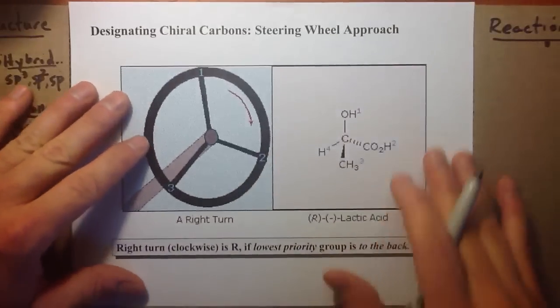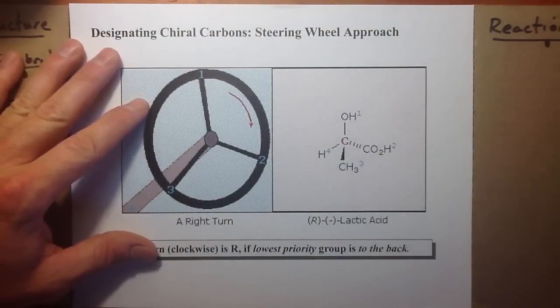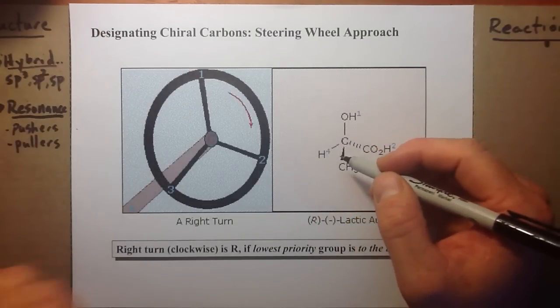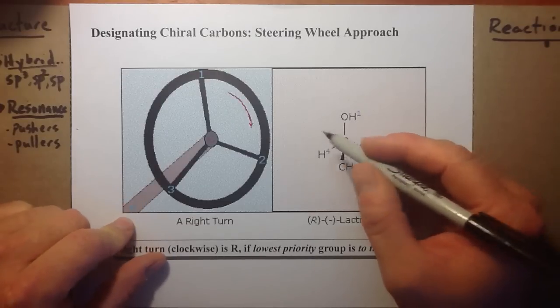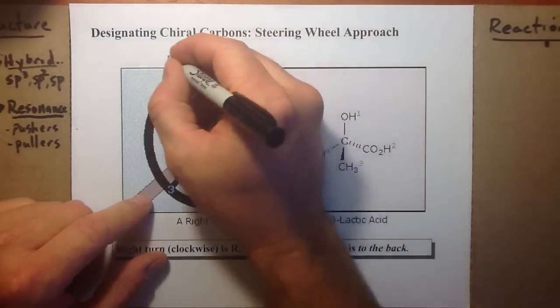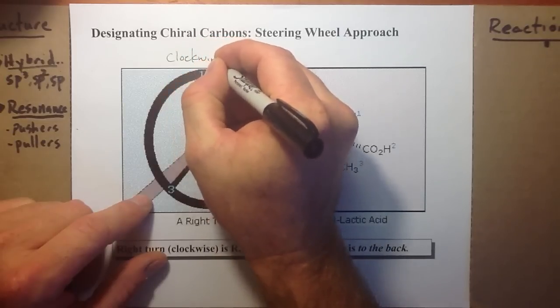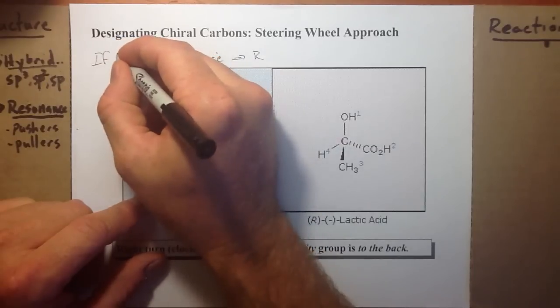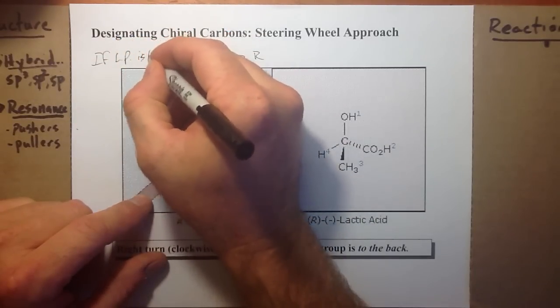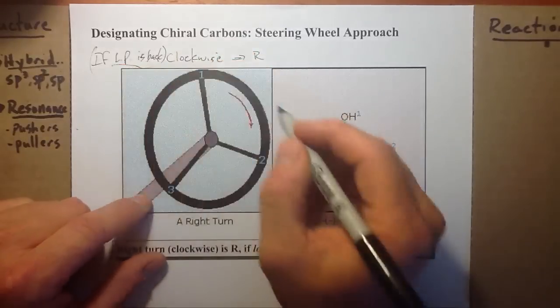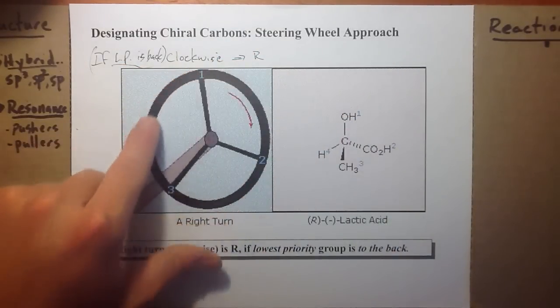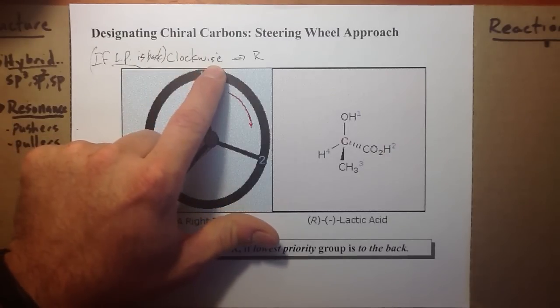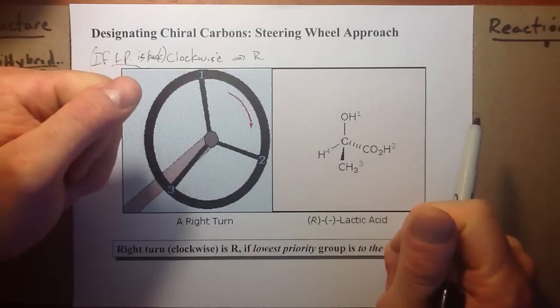There's one other way: the steering wheel approach. I like it if the H's to the back—it's very easy. If H is to the back, that's going to be your steering column, it's the lowest priority group. And clockwise turns—this is a very important if—if LP is back, clockwise is R, and counterclockwise with rotation of one to two to three would be S. LP to the back, clockwise is R. It's a good approach to use with molecules.